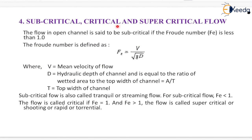Next is subcritical, critical, and supercritical flow. The flow in open channel is said to be subcritical if the Froude number is less than 1. Froude number is defined as Fr = v / √(gd), where v is the mean velocity of flow, d is the hydraulic depth of channel equal to the ratio of wetted area to the top width of channel (A/T), and T is the top width of channel. Subcritical flow is also called tranquil or streaming flow. The flow is called critical flow if the Froude number equals 1, and if the Froude number is greater than 1, the flow is called supercritical, shooting, rapid, or torrential flow.